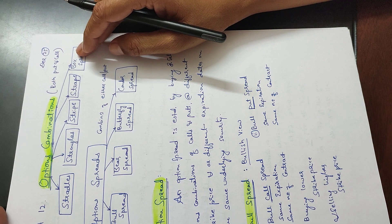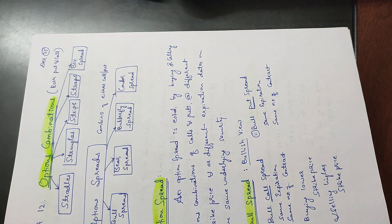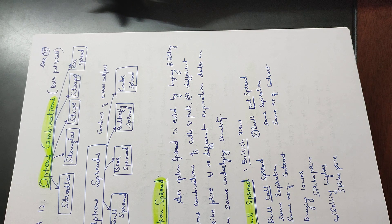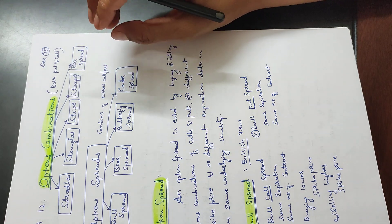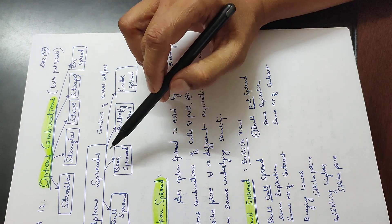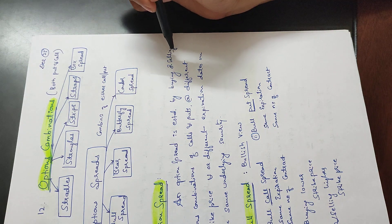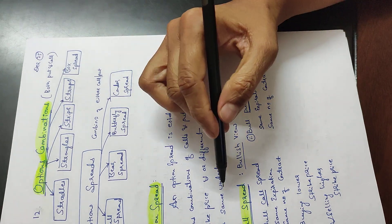Option combinations involve both put and call: straddles, triangles (strangles), strips, straps, box, and spreads. In future options, you can use derivatives for trading and investing. Option spreads are a combination of either calls or puts — unlike option combinations where put and call are different. Option spreads use either all calls or all puts: bull spread, bear spread, butterfly spread, and condor spread.